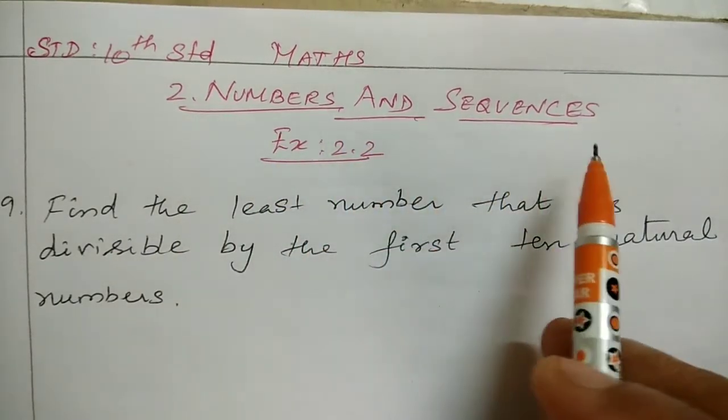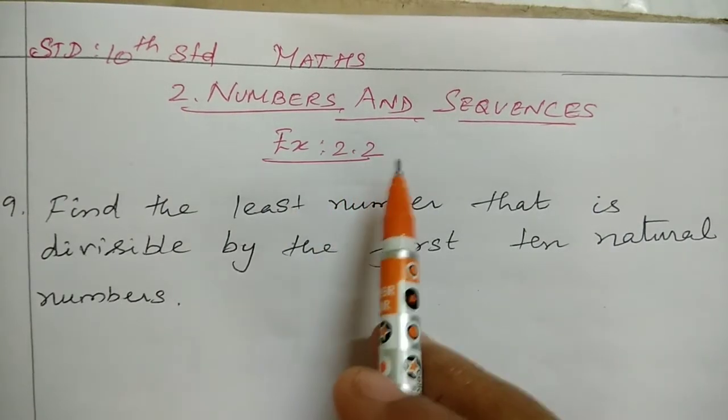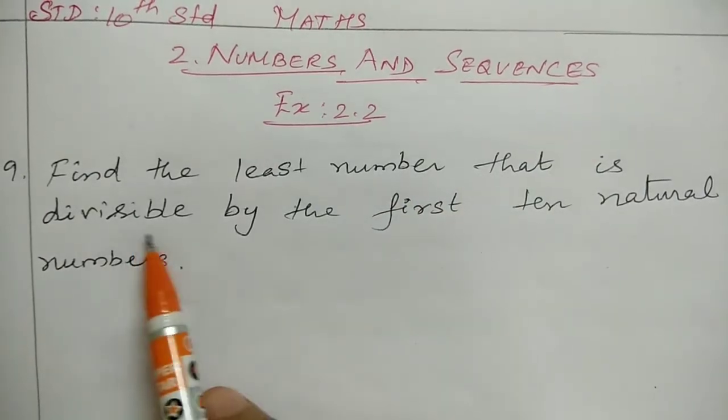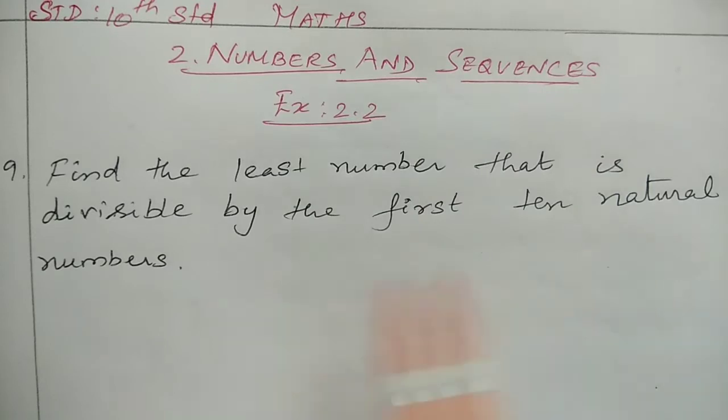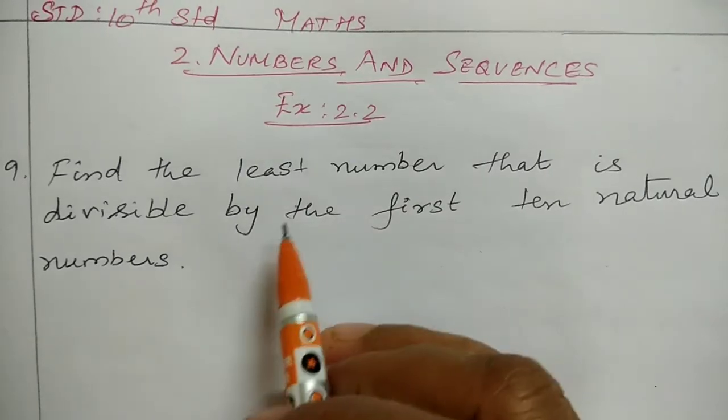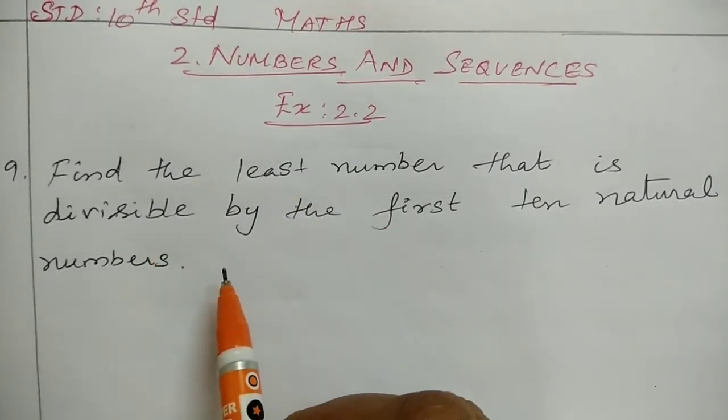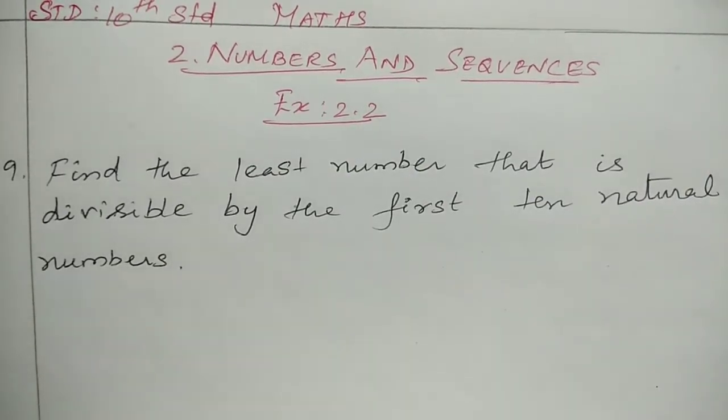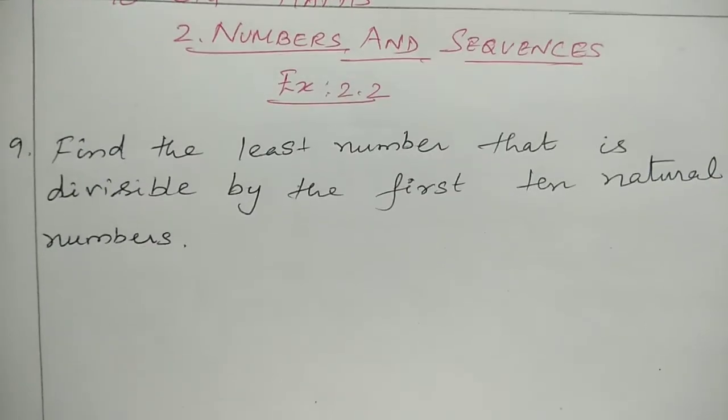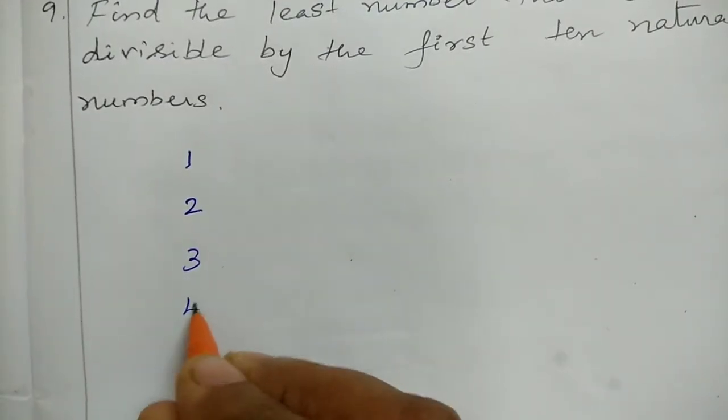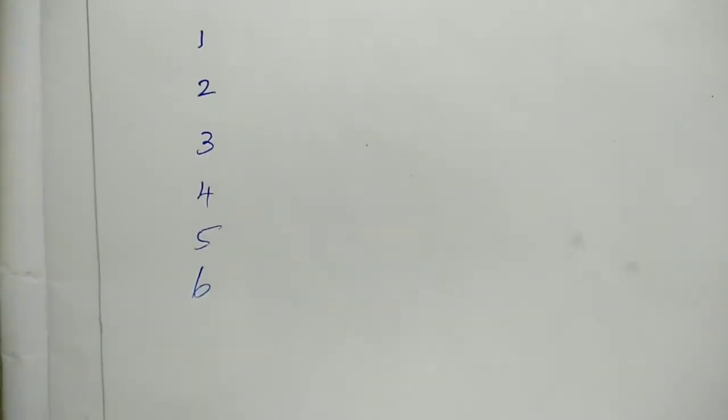Second chapter, Numbers and Sequences, Exercise 2.2, question 9. Find the least number that is divisible by the first 10 natural numbers. First 10 natural numbers, least number that is divisible, we need LCM.